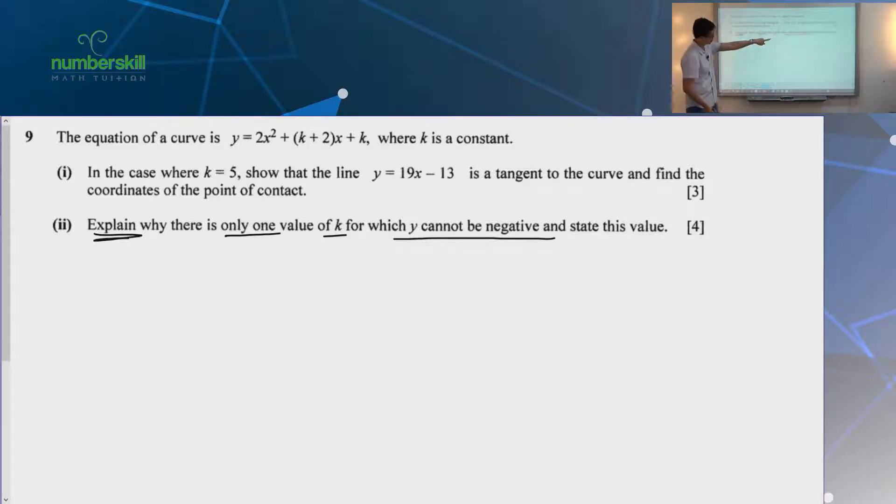Explain why there's only one value of K for which Y cannot be negative. And state this value. So, the state this value is one mark. The rest are all three marks. Y cannot be negative means this must be positive or equal to zero. I think we've talked about this many times. Never negative doesn't mean always positive. Remember? We've talked about that many times. In class, right? Not girl doesn't mean you must be boy. That kind of idea.